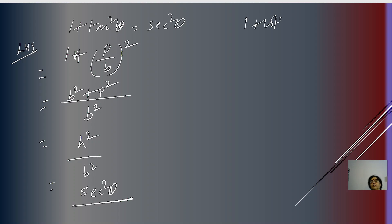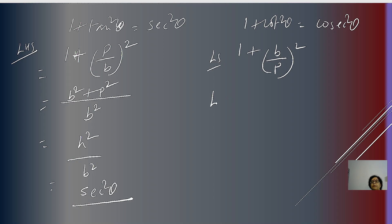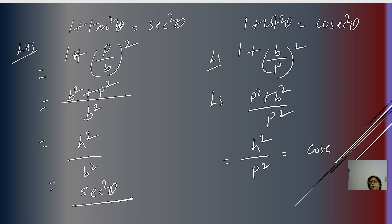The third identity is 1 + cot²θ = cosec²θ. Taking the left-hand side: 1 + (B/P)² becomes (P² + B²)/P² = H²/P². Since H/P = cosec θ, this becomes cosec²θ, the right-hand side. You can also proceed from the right-hand side and arrive at the left-hand side.